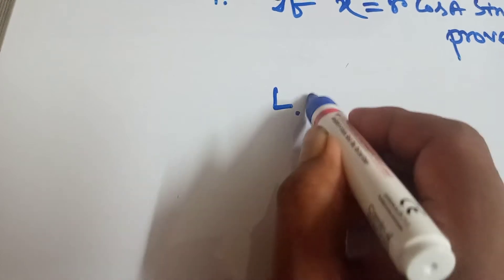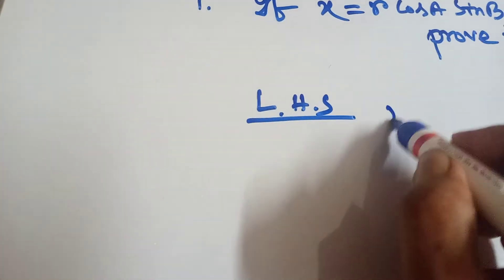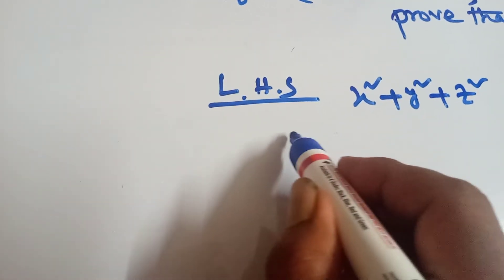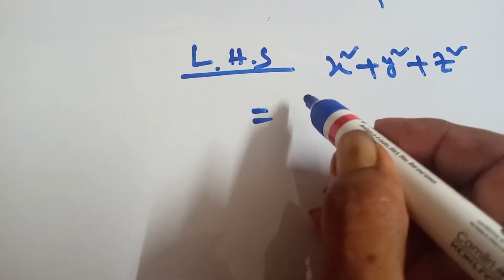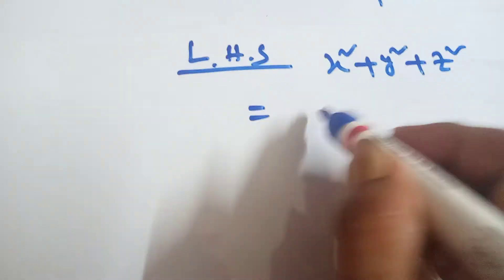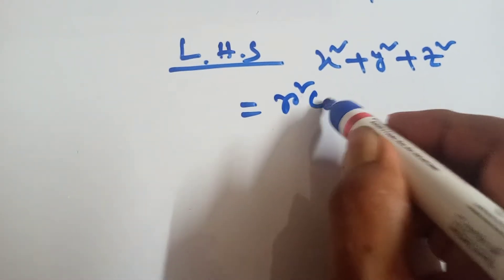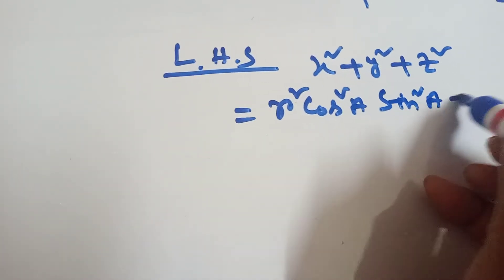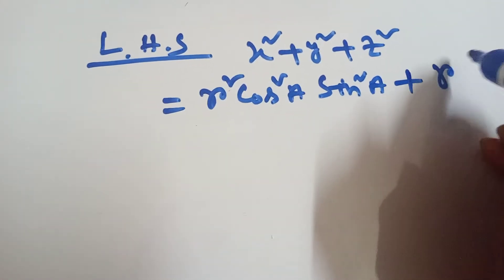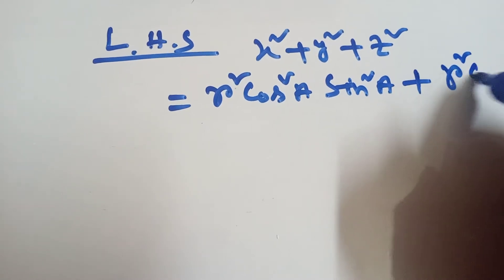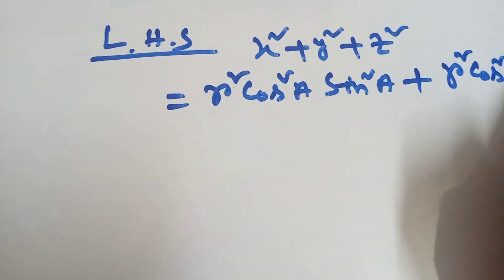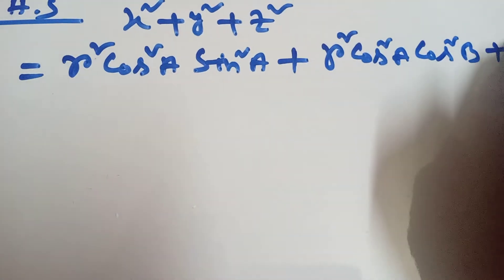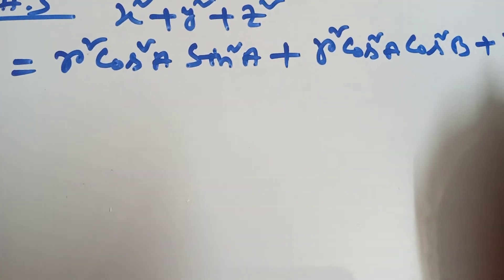Take the left hand side: x square plus y square plus z square. Now putting the value of x, y, z — x square will be R square cos square A into sin square B, plus y square which is R square cos square A into cos square B, plus z square which is R square sin square A.